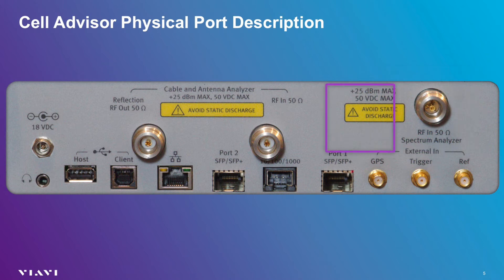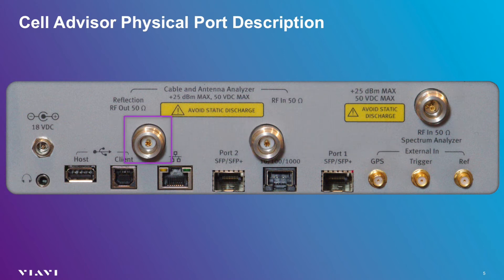The far left RF port, labeled antenna analyzer output and return loss, is used to sweep cables. This is the port you will use to determine the VSWR of an antenna system or locate a fault using a distance-to-fault measurement. This port is also used as the source for making two-port insertion loss or insertion gain measurements and can be configured to output a constant wave signal, or CW signals as they are sometimes called. Certain models within the Cell Advisor product line may be configured without this port; please refer to the product matrix for additional information on configurations.